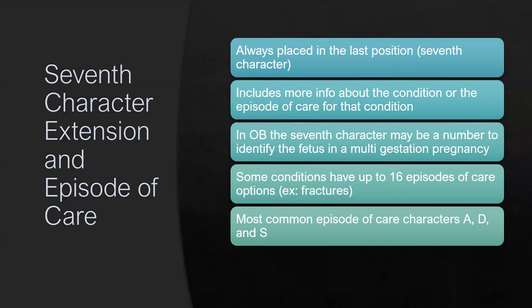The episode of care identifies the patient's place within the care continuum. For example, the episode of care may identify that the patient is still in active treatment status or is coming in for a subsequent encounter after the active treatment phase has passed. Normally, codes that are extended to the seventh character contain a seventh character episode of care identifier. In the majority of cases, the seventh character identifies the episode of care, but there are exceptions. In rare instances, the seventh character may be used to identify a specific detail other than the episode of care, such as laterality or fetus in multiple pregnancies. If the seventh character is not added to the code, then it is considered an invalid code and will not be accepted on a claim.